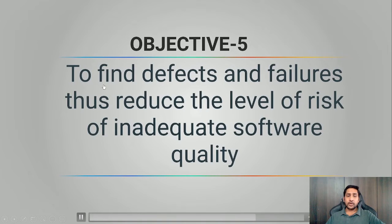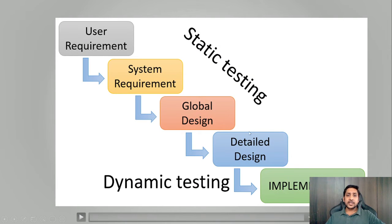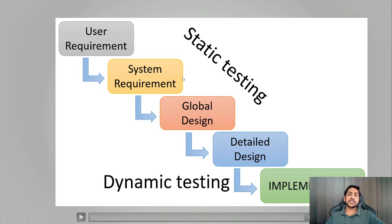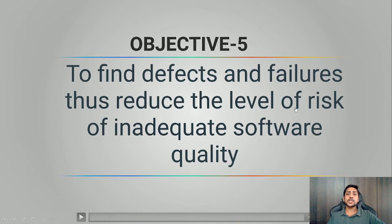The fifth objective is to find defects and failures, thus reducing the level of risk of inadequate software quality. If we find more bugs during testing across all stages, we know that the software is now ready for the next stage, and we reduce the risk of bad software quality.